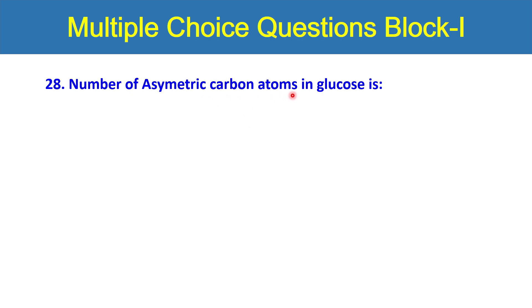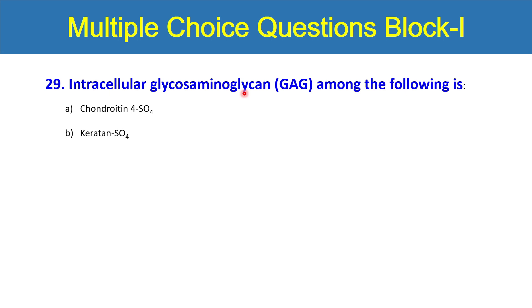Next question is number of asymmetric carbon atoms in glucose. Glucose is a 6-carbon molecule. How many asymmetric carbons are present? 1, 2, 3, 4, or 6? Question 29: intracellular glycosaminoglycan, that is GAG, among the following is chondroitin sulfate, chondroitin-4-sulfate, keratan sulfate, hyaluronic acid, or heparan sulfate? Which one is the GAG among these 5 options?